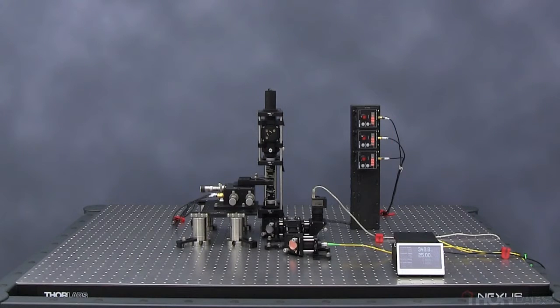Thorlabs' OTKB modular optical tweezers system is designed as a complete optical trapping system for the capture and manipulation of microscopic sized objects. The modular design allows the optical trap to be easily modified to add functionality.